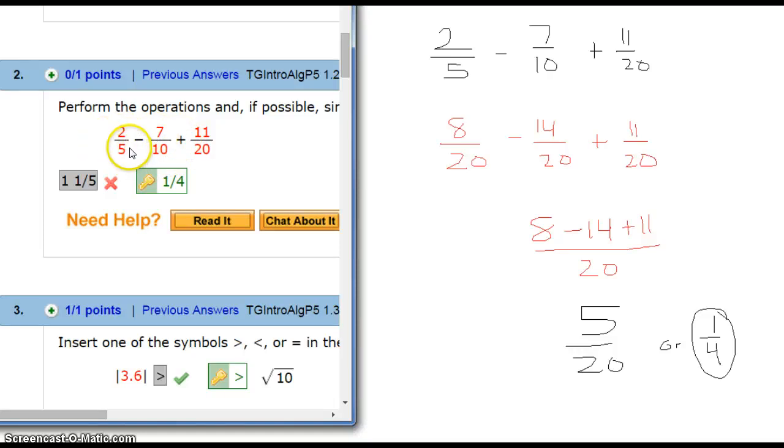For number two, subtracting and adding fractions, it's all about getting a common denominator. So 5, 10, and 20 - they can all divide into 20. So 20 would be your common denominator.